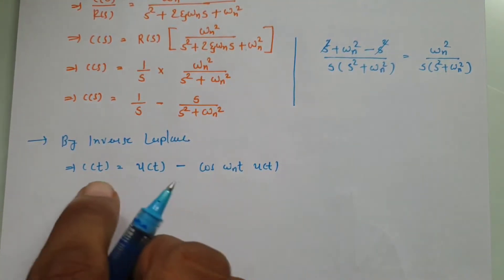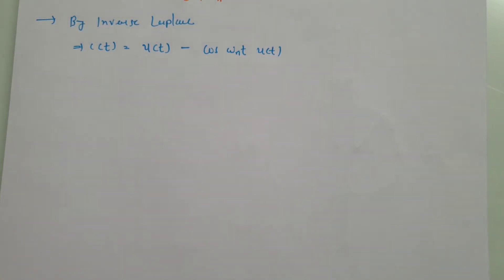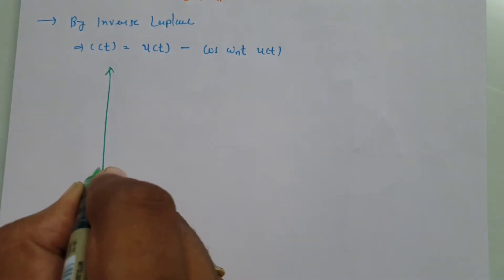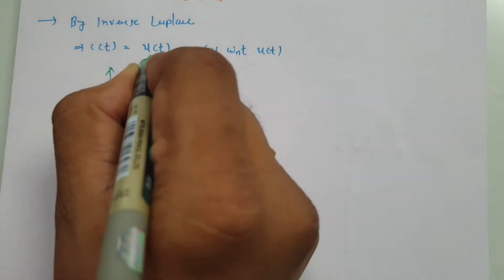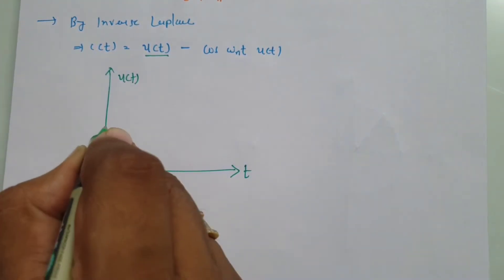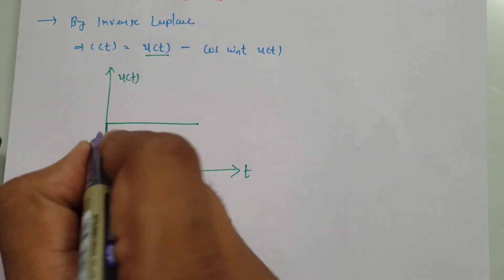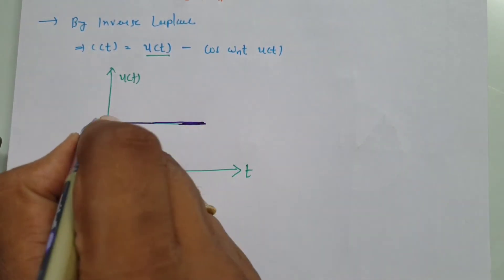Now I'll explain this output in terms of graphical understanding to give you a clear idea of what happens. Let me show a graphical representation. First, this term u(t) — I'll use a different color for better resolution — u(t) is a step function starting at 1 for t greater than or equal to zero.